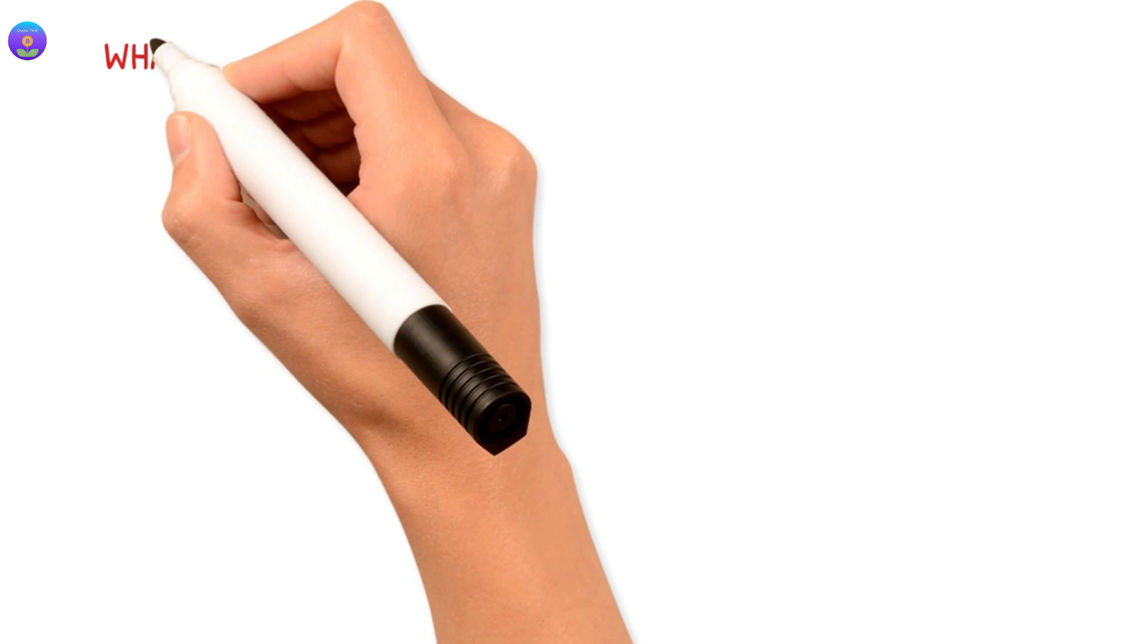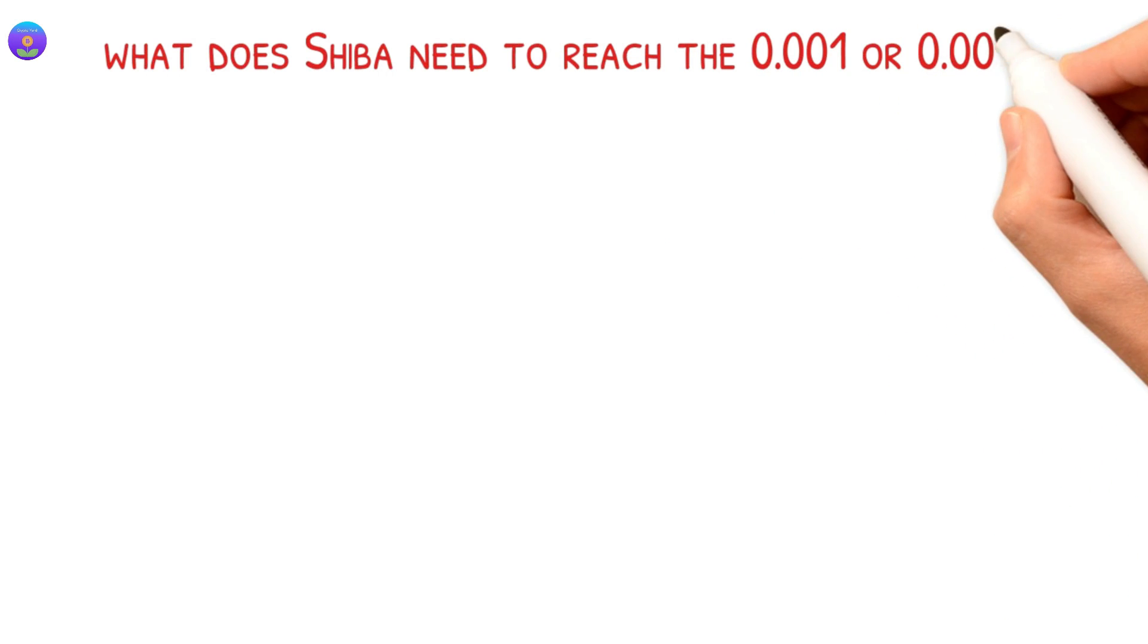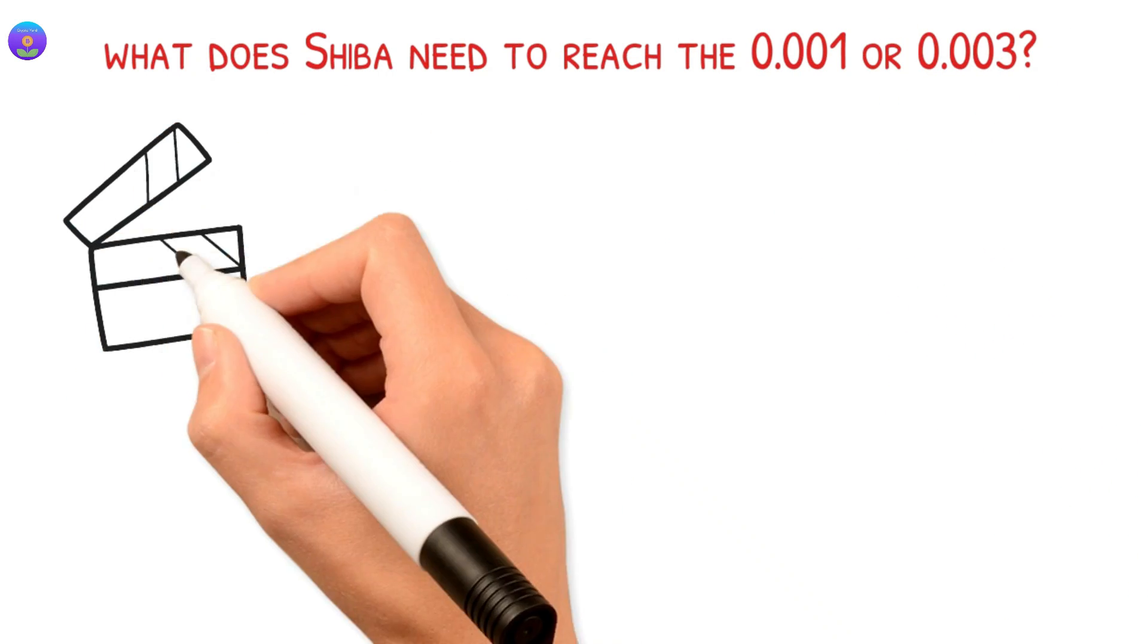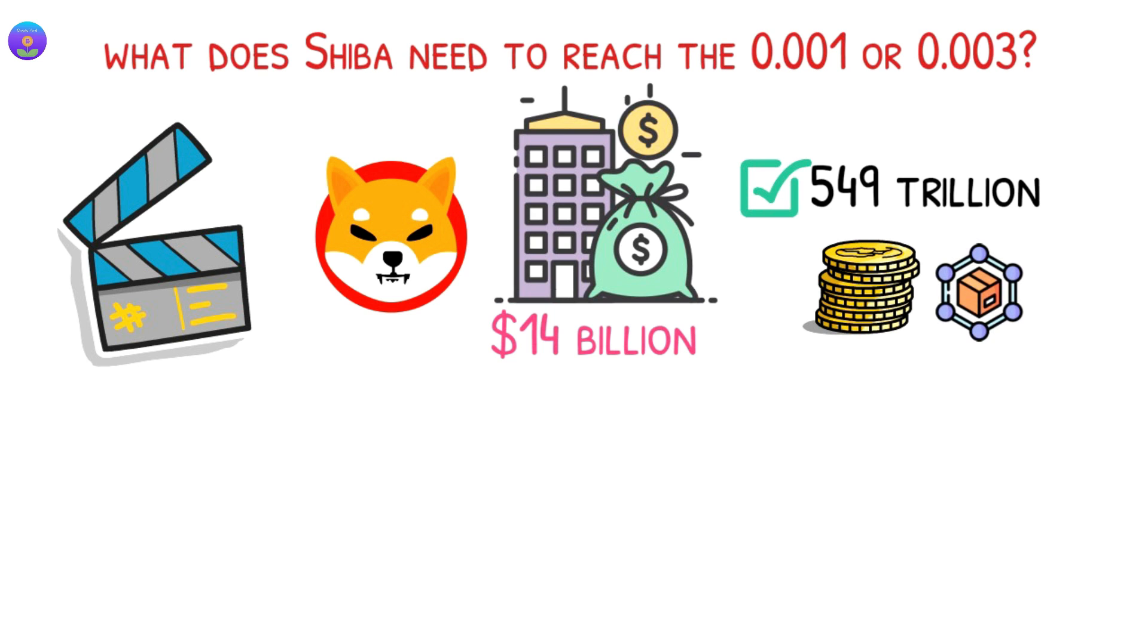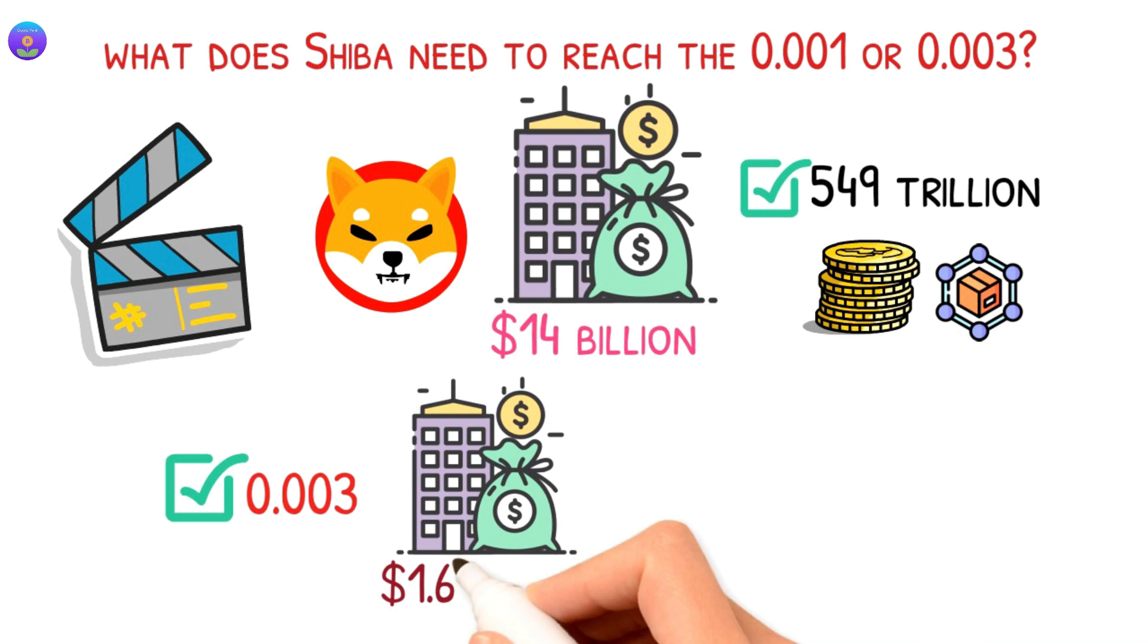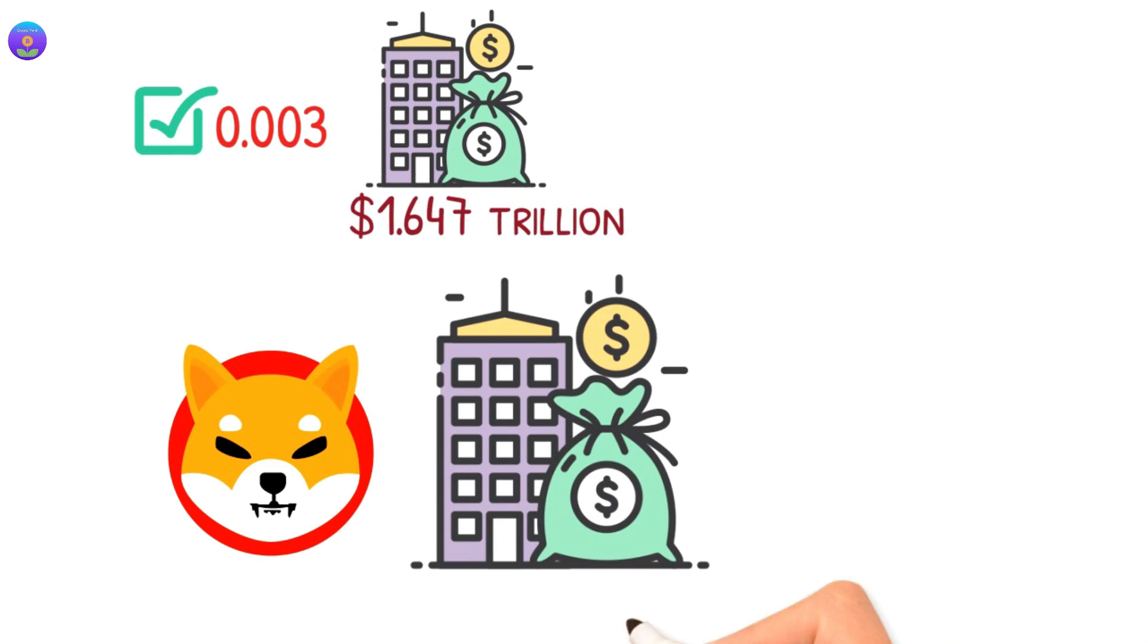But the question is, what does Shiba need to reach 0.0030? By the time of recording this video, Shiba has a market cap of 14 billion dollars and around 549 trillion tokens in the circulating supply. For Shiba to reach the 0.003 price mark, we will have a market cap of 1 trillion 647 billion. This will take Shiba to be the biggest market cap exceeding Bitcoin.